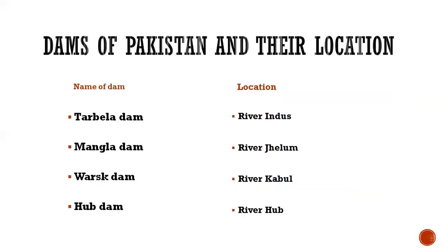Let's look at the dams of Pakistan and their location. Dams are built on rivers. Tarbela Dam is built on River Indus. Mangla Dam is built on River Jhelum. Warsak Dam is built on River Kabul, and Hub Dam is built on River Hub.